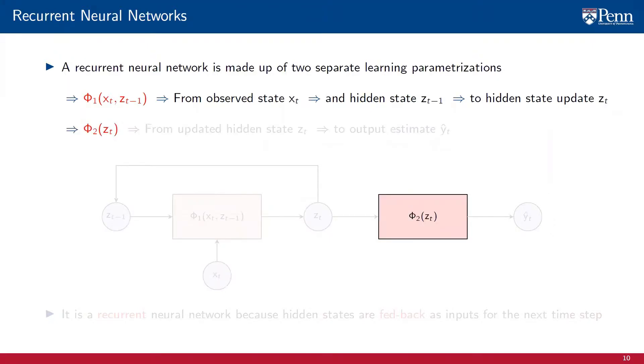The second component of the RNN is the learning parametrization phi2, which maps the updated hidden state zt to a predicted output y hat t.